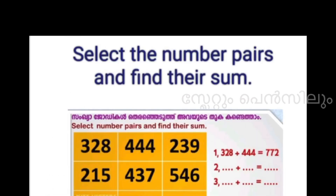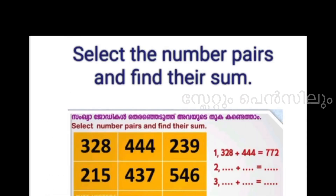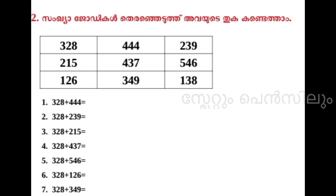Select the number pairs and find their sum. OK, same number. Daniel, if we ask the pairs here — 328 first. 328, 328 — all the pairs, that's the same.